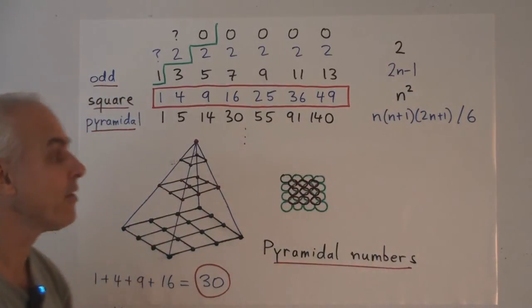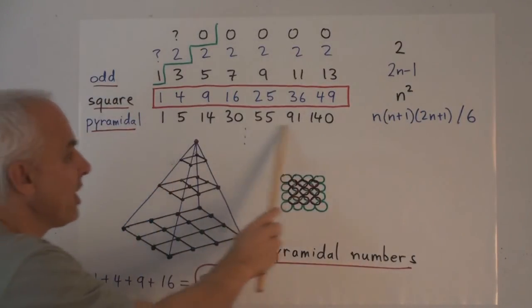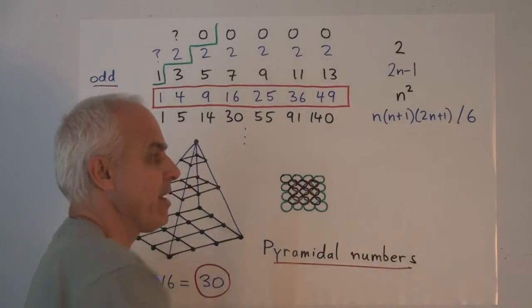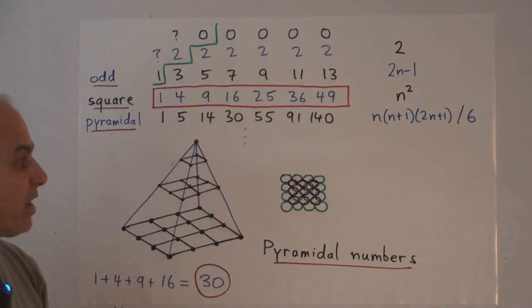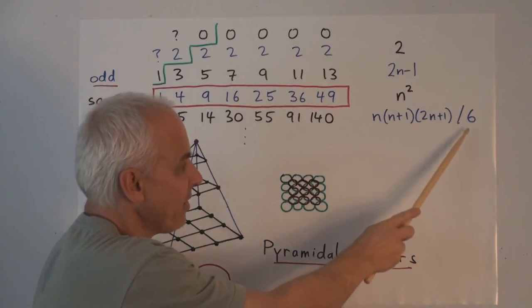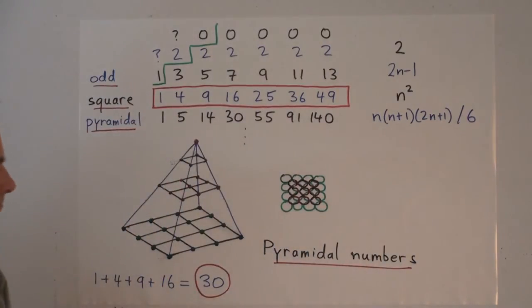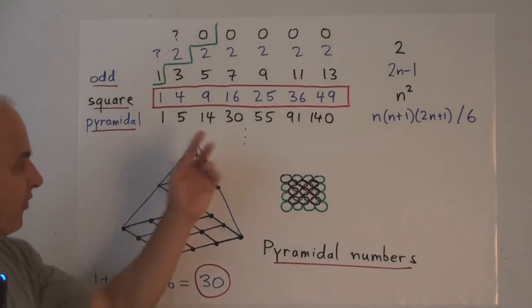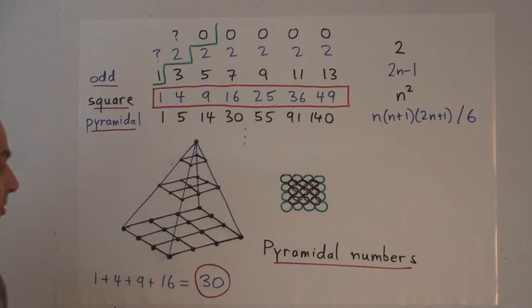And the square numbers, of course, have formula n squared. And we saw last time, or I stated last time, that the sum of the first n squares has this particular polynomial formula: n times n plus 1, times 2n plus 1, divided by 6.